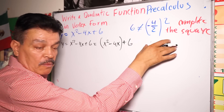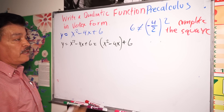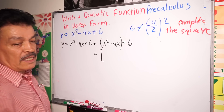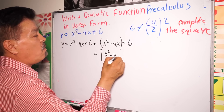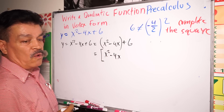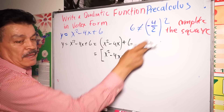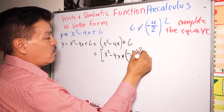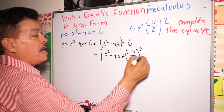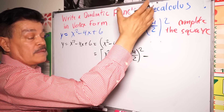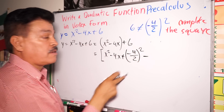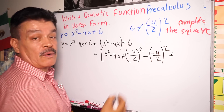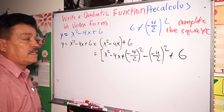All right. We have to add (minus 4 divided by 2) to the second power. Remember: add or subtract. Remember the concept I gave you before to start our class. It's going to be minus 4 divided by 2, to the second power, plus 6. You have everything ready right here.